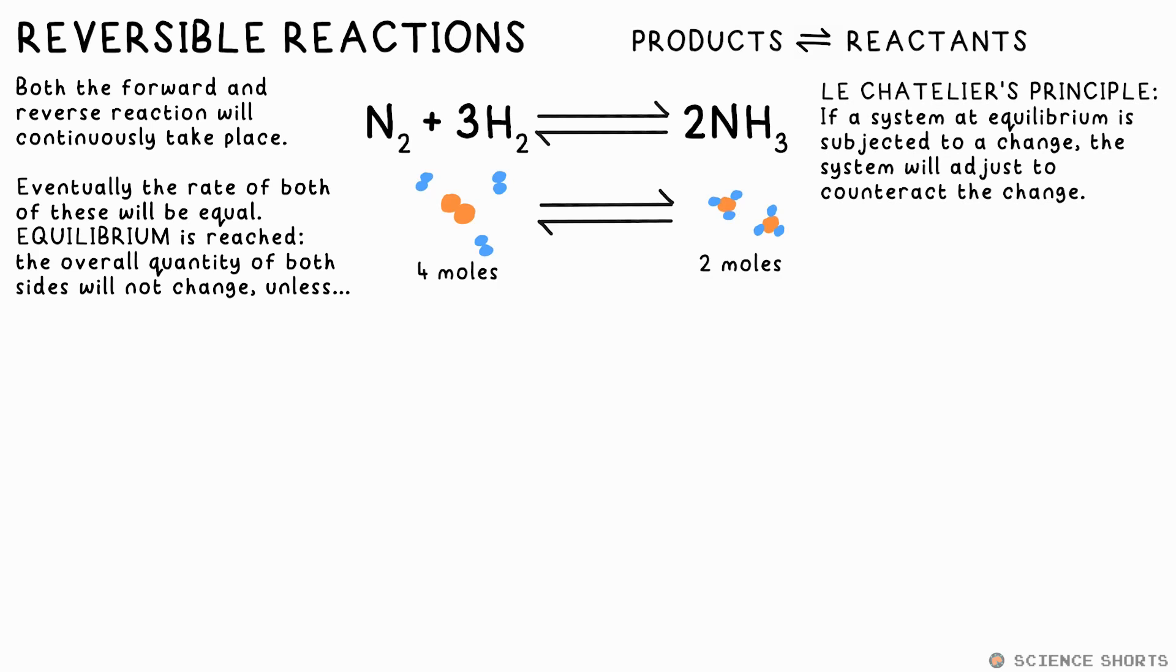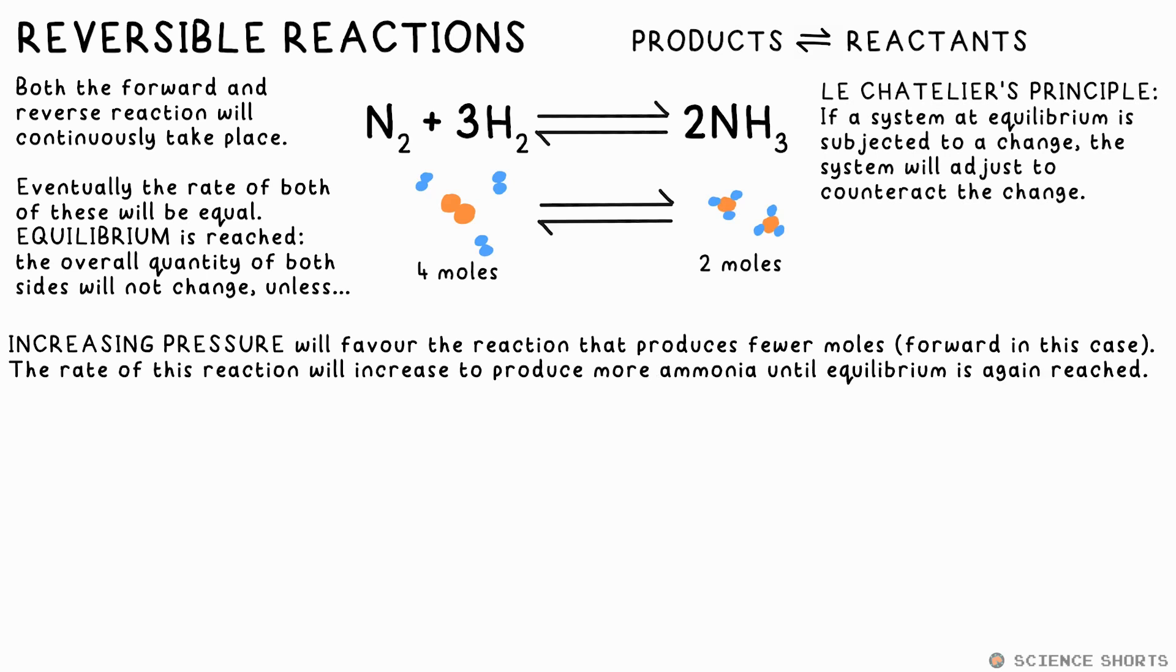There's a greater number of moles on the left than on the right of this reaction, which means that the reactants take up more space. Therefore, if you increase the pressure of all these gases, we say this favors the forward reaction. That is, the rate of the forward reaction will increase until equilibrium is once again reached. This will, of course, result in more ammonia made, or we might say we have a higher yield of ammonia.